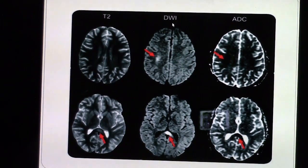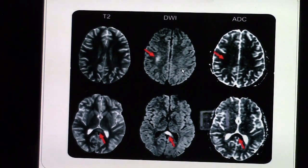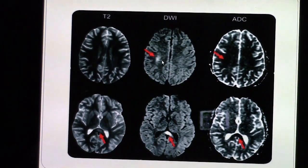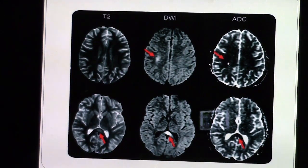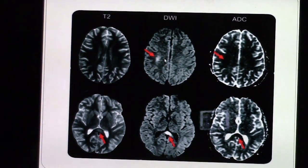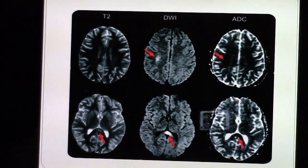Diffusion-weighted images are the cornerstone cut used to diagnose acute stroke. Acute stroke or restricted diffusion would look bright on DWI. On the ADC map, actual restricted diffusion will be bright on DWI and dark on ADC. If it is T2 shine-through, as in the case of inflammation, it will be bright on both DWI and ADC, which helps differentiate T2 shine-through from true restricted diffusion.